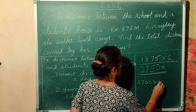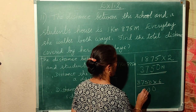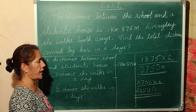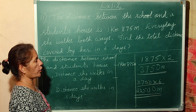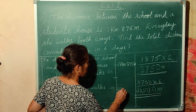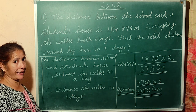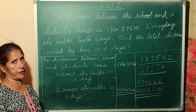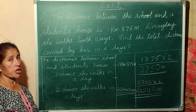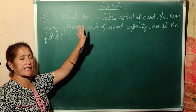3,750 into 6: 6 zeros are 0, 6 fives are 30, 6 sevens are 42 plus 3 = 45, 6 threes are 18 plus 4 = 22. Answer: 22,500 meters. So she walks 22,500 meters in 6 days or in a week.